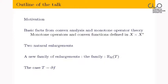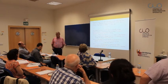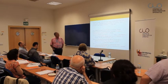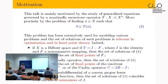This talk is motivated by the study of generalized equations governed by maximally monotone operators T from a Banach space X toward its dual X-star. One of the important problems is finding the zero of a maximal monotone operator, which means finding an x in X such that 0 belongs to T of x. This problem has been extensively used for modeling various problems, and the set of solutions is relevant in optimization and fixed point theory.